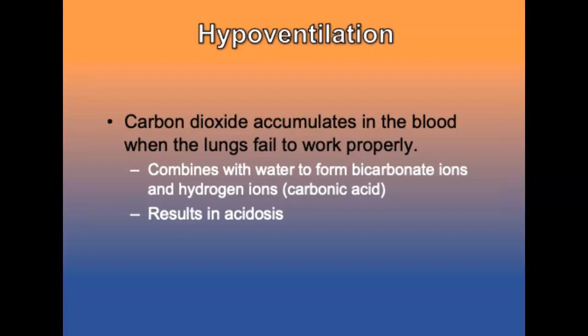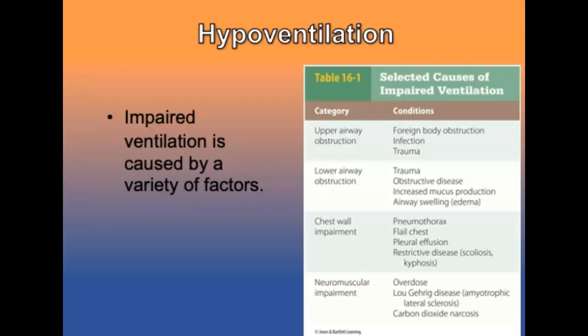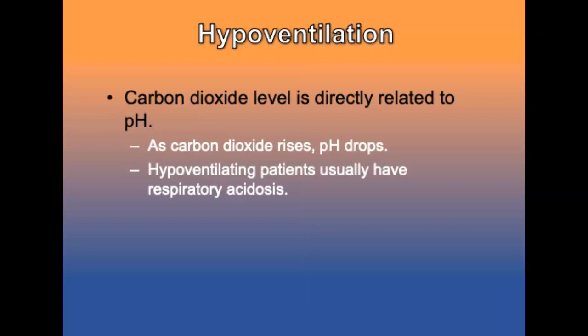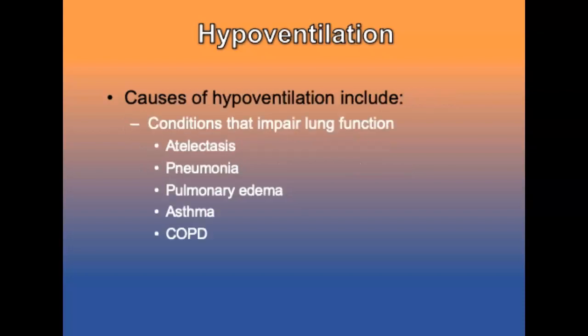Carbon dioxide accumulates in the blood when the lungs fail to work properly. It combines with water to form bicarbonate ions and hydrogen ions, forming carbonic acid, and results in acidosis. Carbon dioxide level is directly related to pH, so hypoventilation patients usually have respiratory acidosis. As carbon dioxide levels rise, pH levels drop. Conditions that can cause hypoventilation include pneumonia, pulmonary edema, asthma, or COPD.